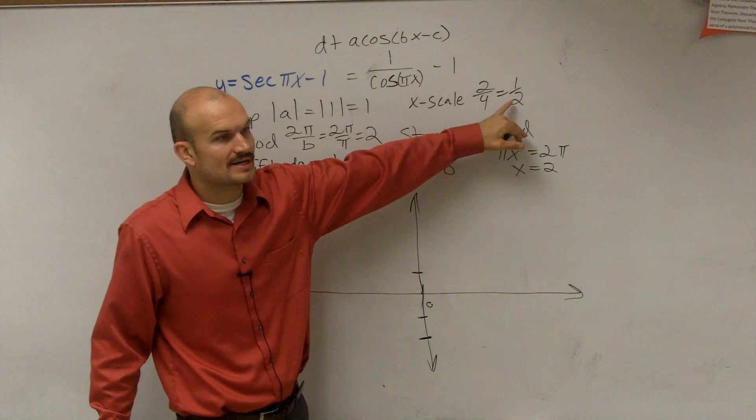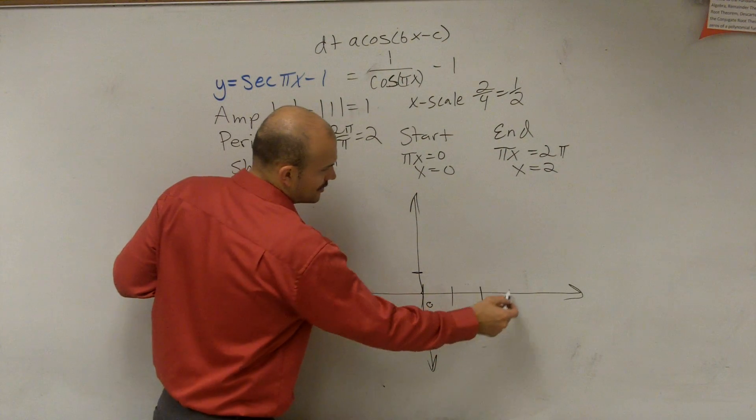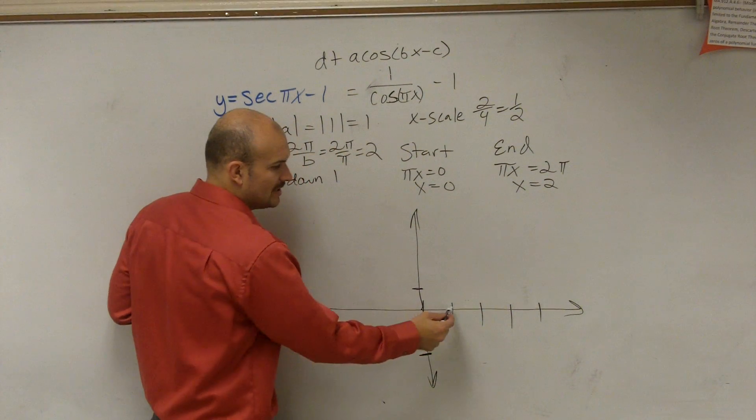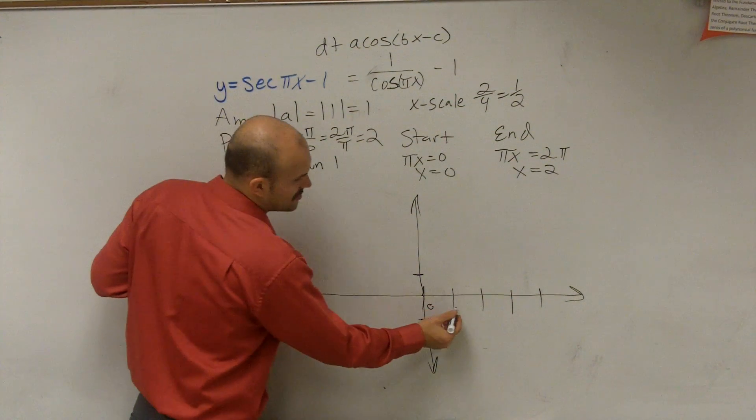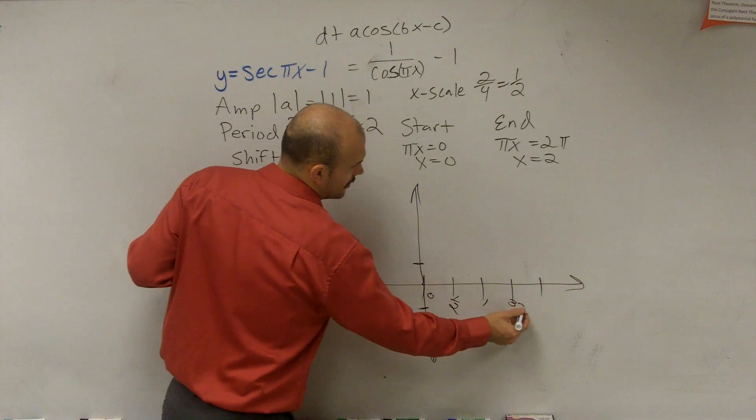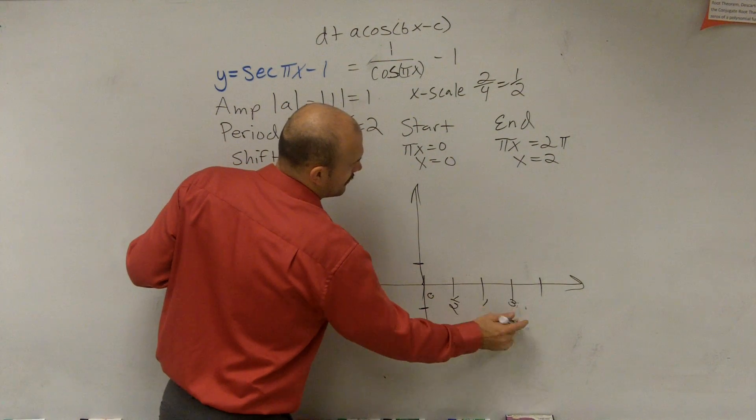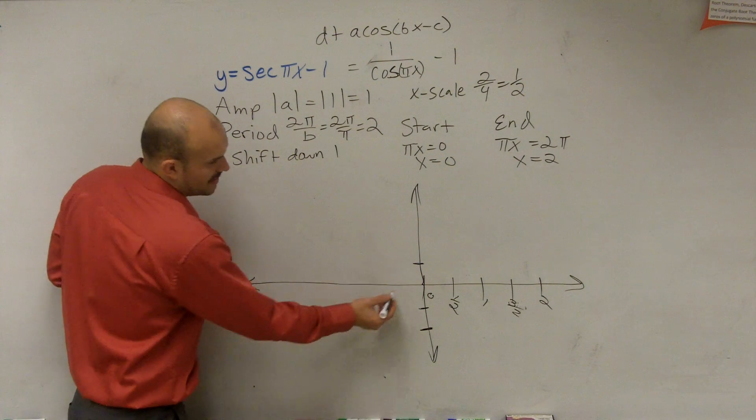So now let's go and get our x-scale. So remember, our x-scale is 1 half. So there's four critical points that we talked about. 1, 2, 3, 4. Well, between each critical point is 1 half. So that means the first point would be 1 half. Next point would be 1. Next point would be 3 halves. And the next point would be 2.